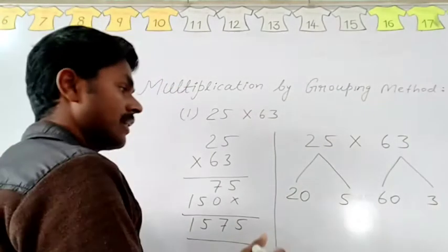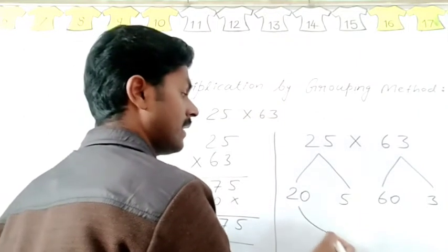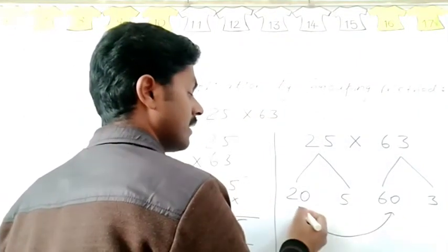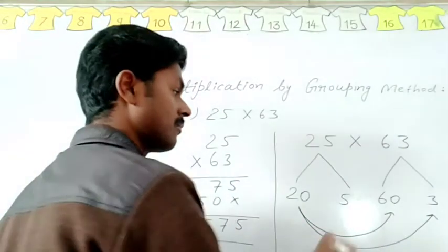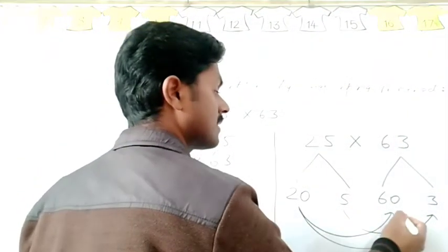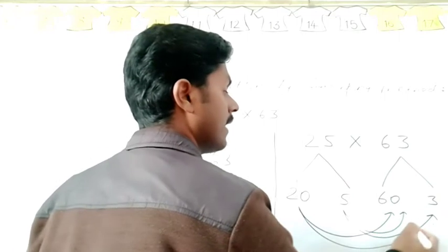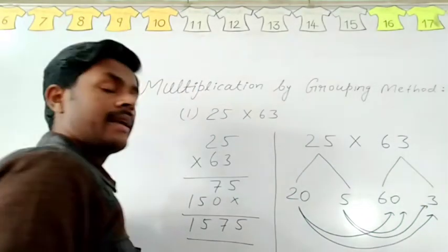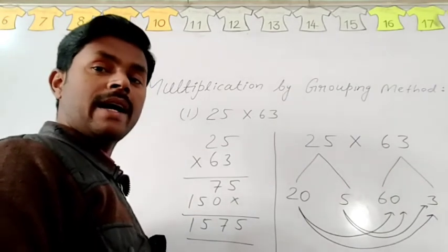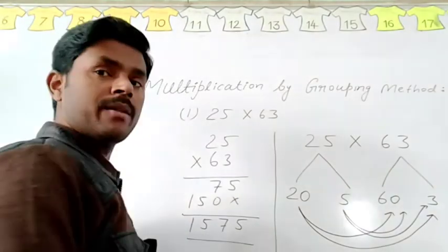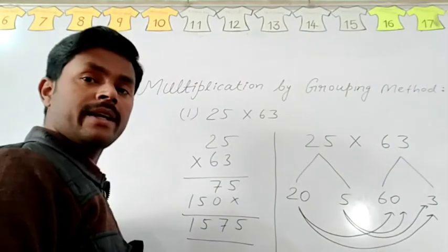After that, we have to multiply 20 and 60, then after 20 and 3. We have to also multiply 5 and 60 and 5 and 3. And after multiplying, we have to add all these products. Then our answer will be same as simple method. So now be ready.